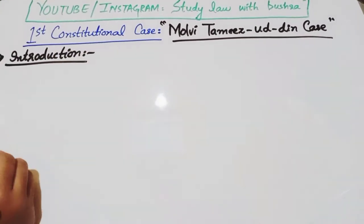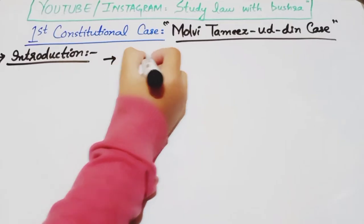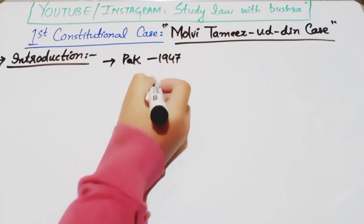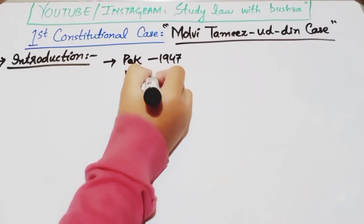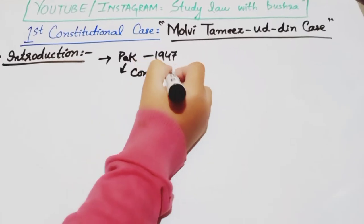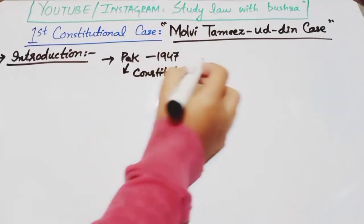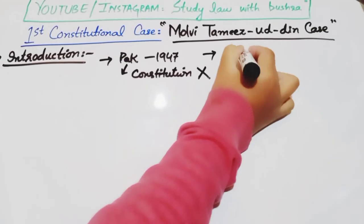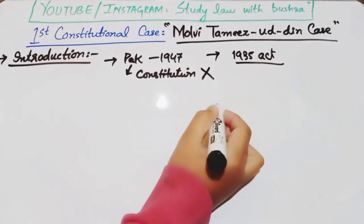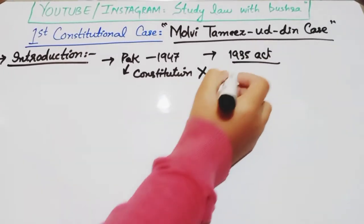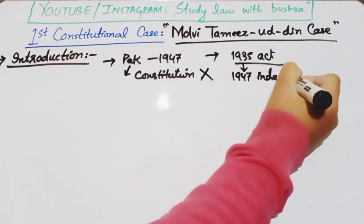As we all know, Pakistan appeared on the map of the world on 14 August 1947. When Pakistan gained independence in 1947, there was no permanent constitution at that time. It was a provisional/interim constitution, which was the Government of India Act 1935 along with the Indian Independence Act 1947, with certain amendments.